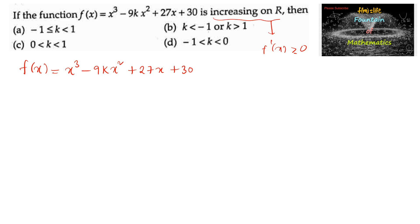Let's differentiate: f'(x) = 3x² - 18kx + 27. We can take 3 common: f'(x) = 3(x² - 6kx + 9).